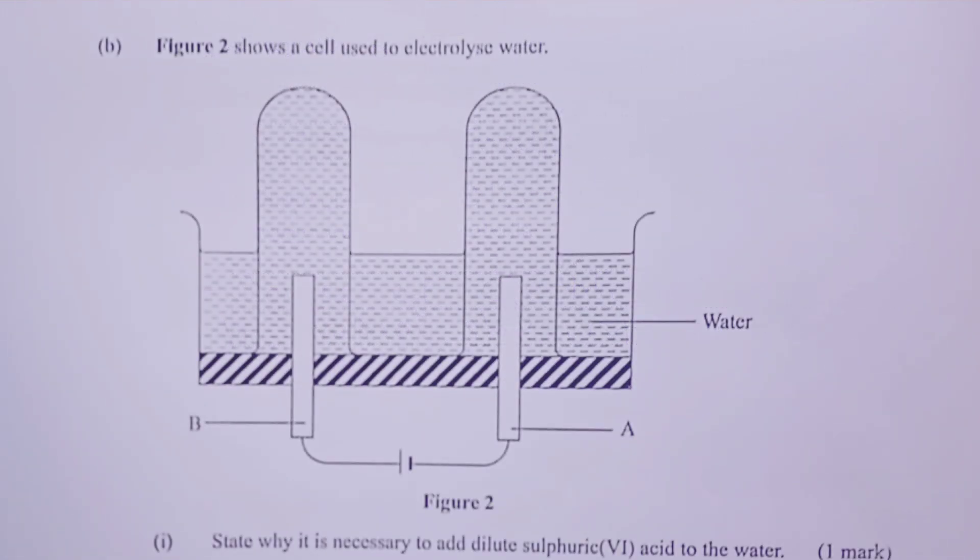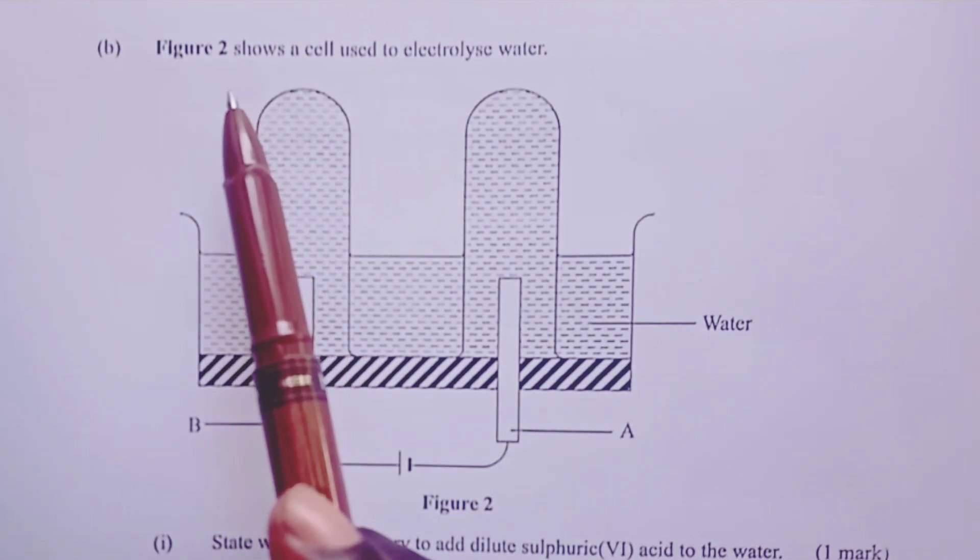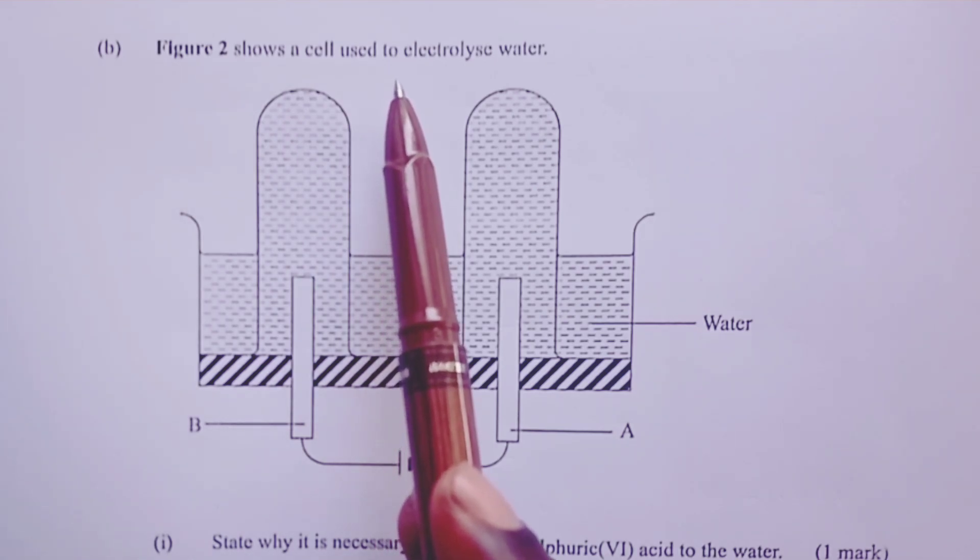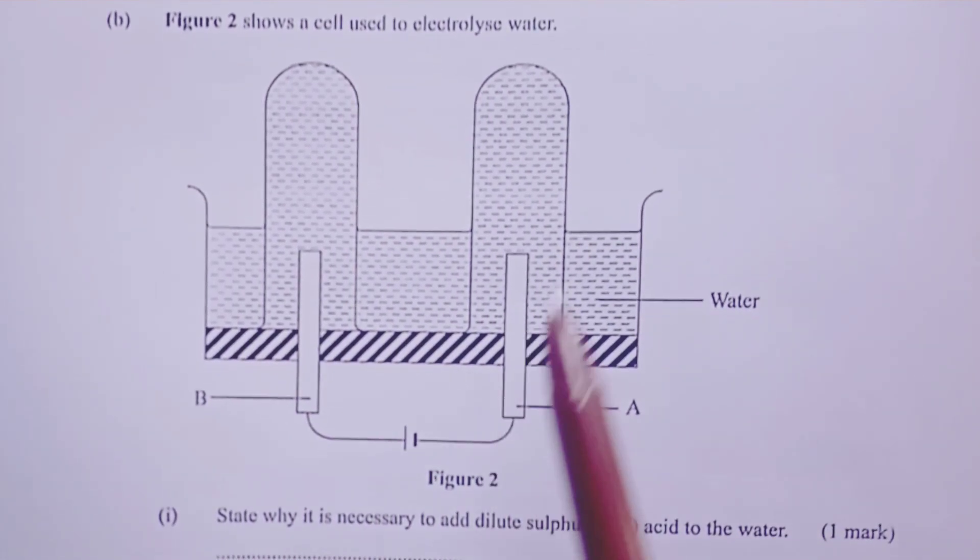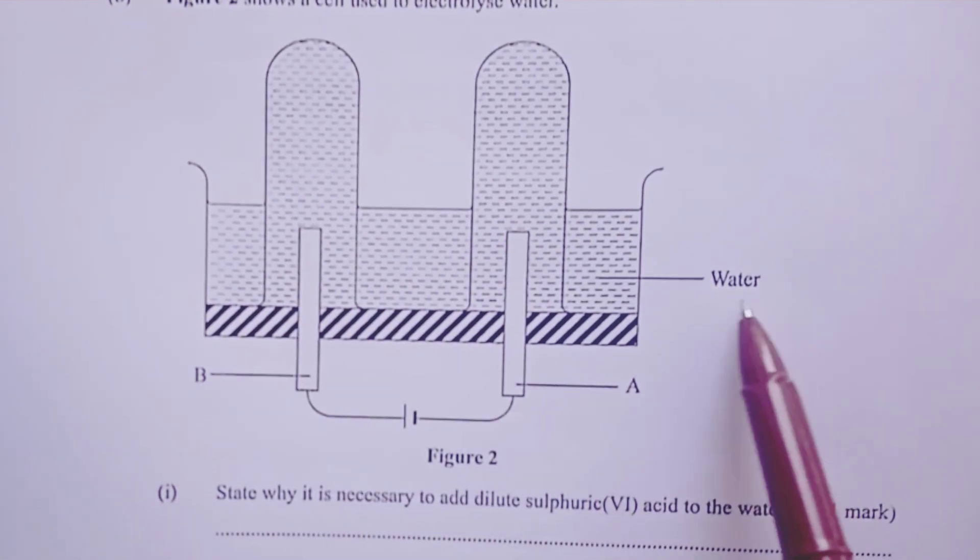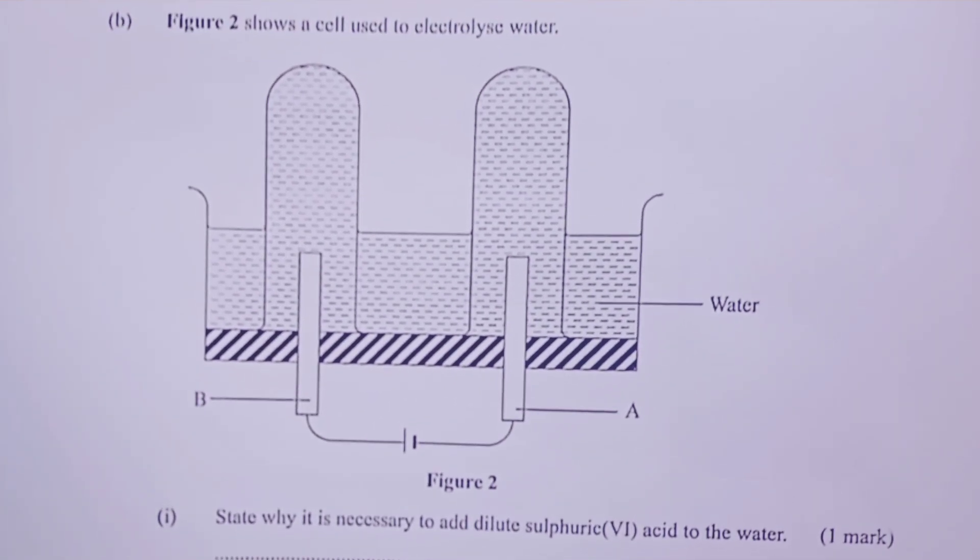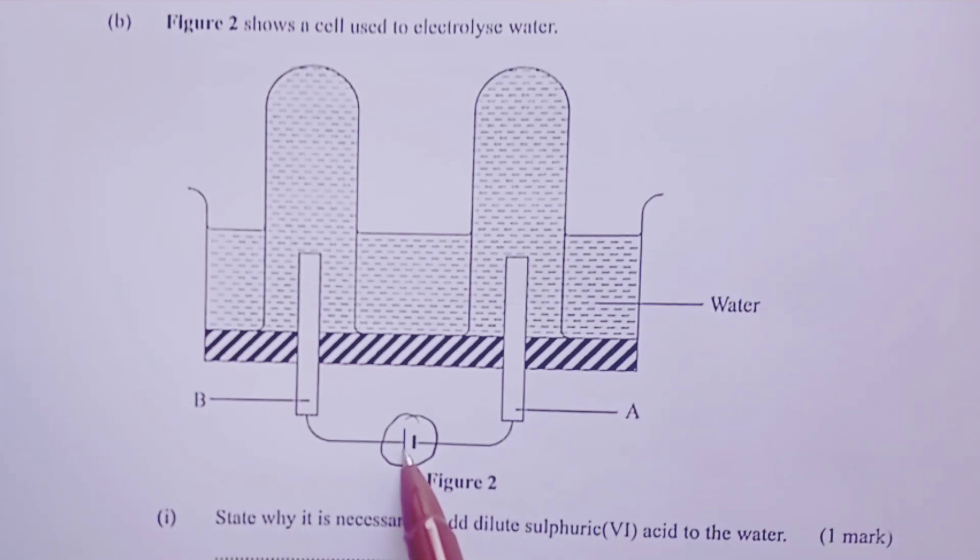Next question is part B. So part B, we are told that figure 2 shows a cell that is used to electrolyze water. So here we are, we have electrode B, electrode A, and water. Now, for identification of the two electrodes, a candidate is supposed to check the arrangement of the cells. This long, thin line here represents the positive terminal, and the short, thick line here is the negative. Then, the electrode connected to the positive terminal, we call anode, and that connected to the negative terminal, we call cathode. So A is cathode, and B is anode.